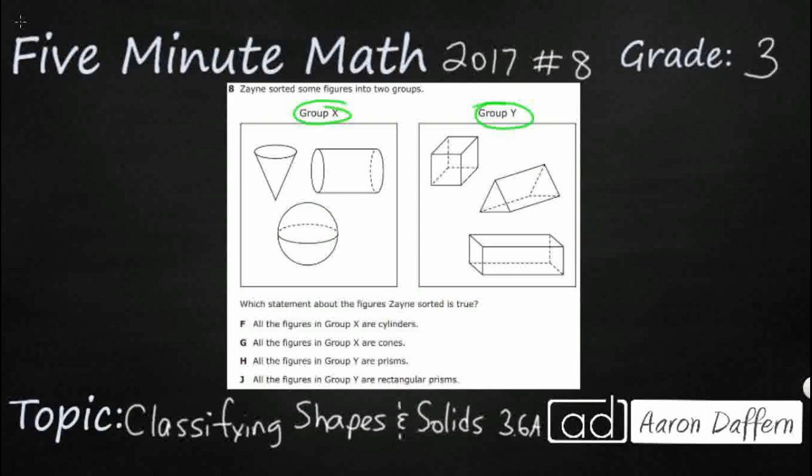Typically when we're looking at these terms, we're using the term solids when we're describing 3D shapes, and sometimes we'll just use the word shapes when we're looking at flat or two-dimensional shapes like circles or rectangles.